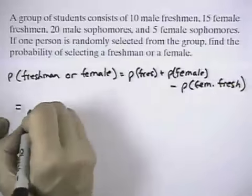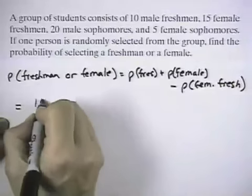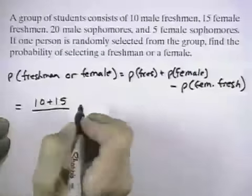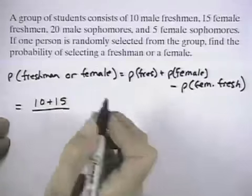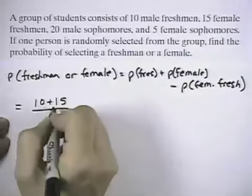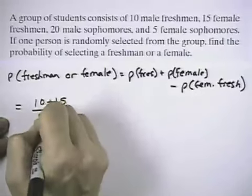So looking at the freshmen, all the freshmen, there are 10 plus 15 for 10 males plus 15 females. And all of the students then, the probability of a freshman would be the number of freshmen out of the total number of students, which is 50.